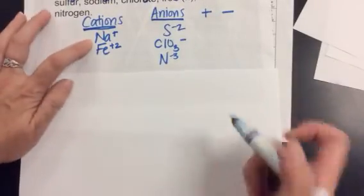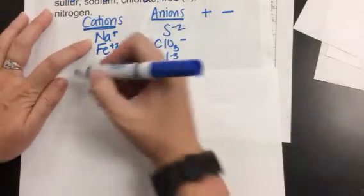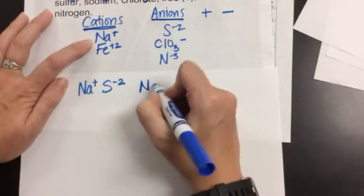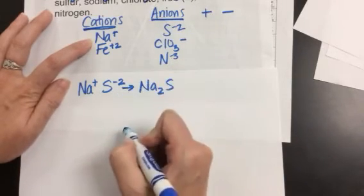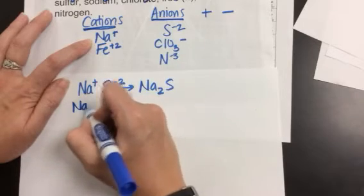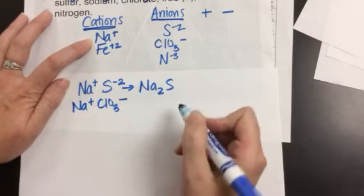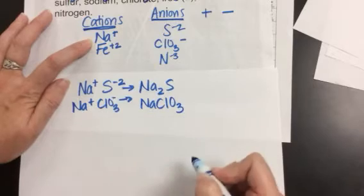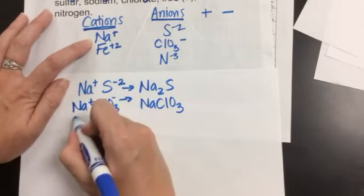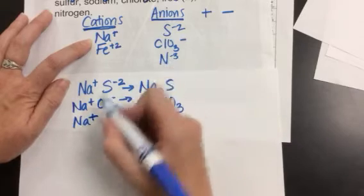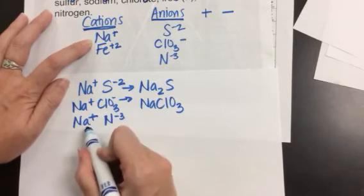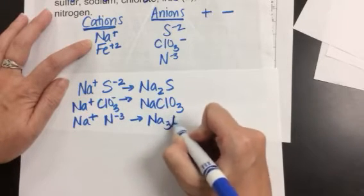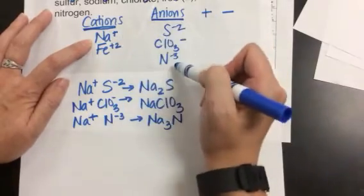I'm going to take sodium and pair it up with all three anions. Sodium plus sulfur swap and drop gives Na2S. Sodium plus chlorate swap and drop is just NaClO3 — one and one. Sodium plus nitrogen: the 3 travels over to sodium, making Na3N. So I've paired sodium with all three of my anions.